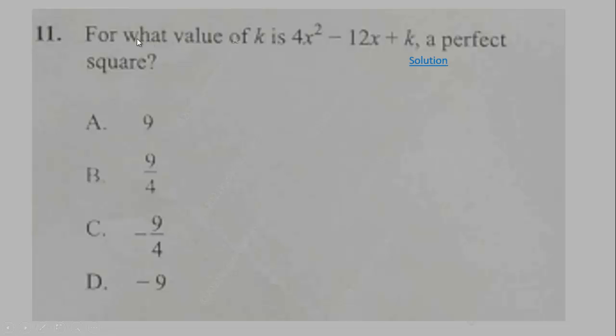Question 11: For what value of k is 4x squared minus 12x plus k a perfect square? This is question 11 of WASSCE 2021 Elective Mathematics. You know this is a quadratic expression.